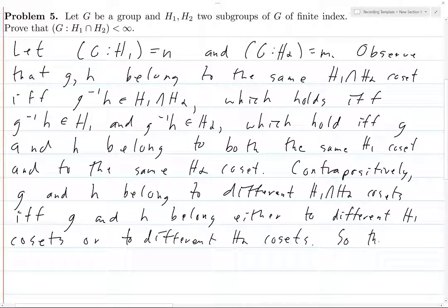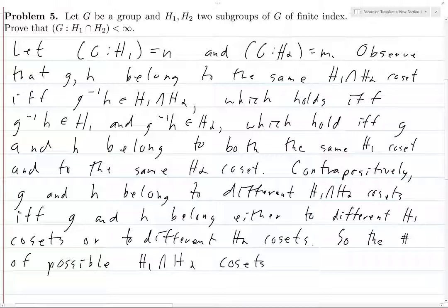So the number of possible H1 intersect H2 cosets is bounded above by the number of distinct combinations of H1 and H2 cosets that we have.